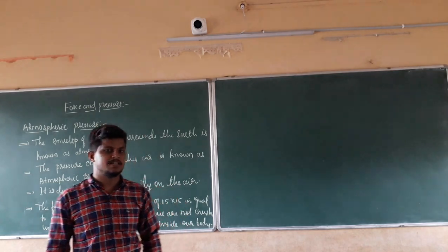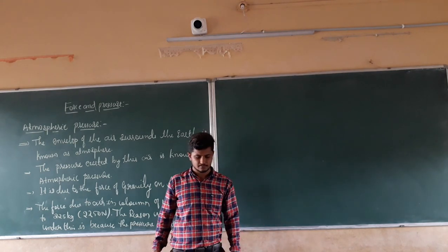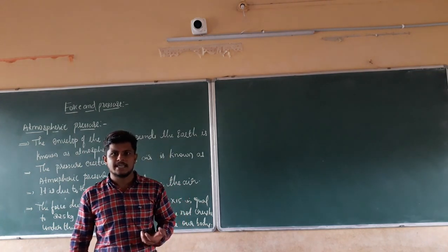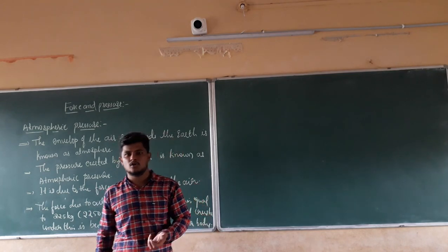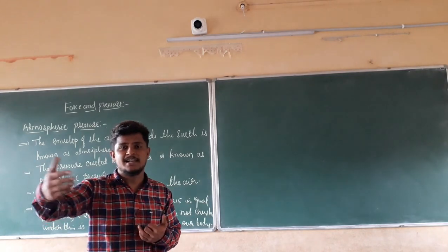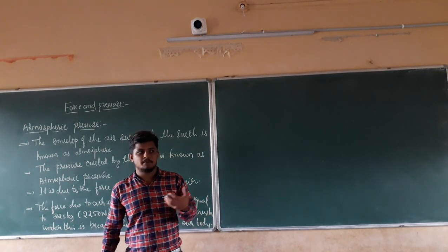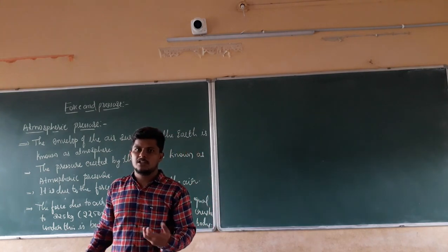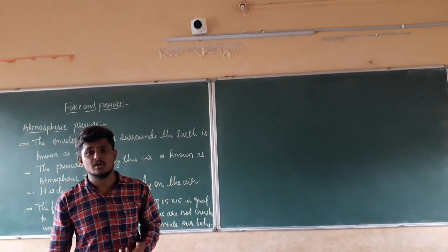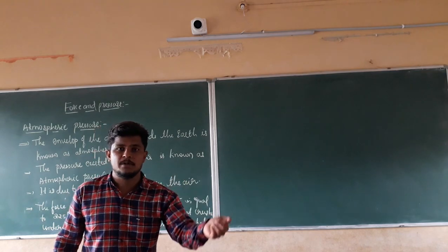In the same manner, in today's class, we are going to discuss about the Earth's atmospheric pressure. Before that, we are going to discuss about the pressure exerted by gaseous particles — that is, gas. We are going to take an example of a balloon. When you blow air inside a balloon, the balloon starts to become bigger. It grows in all directions, not just one direction. That means the gaseous particles are exerting pressure on all sides — on the walls or surface of that balloon.